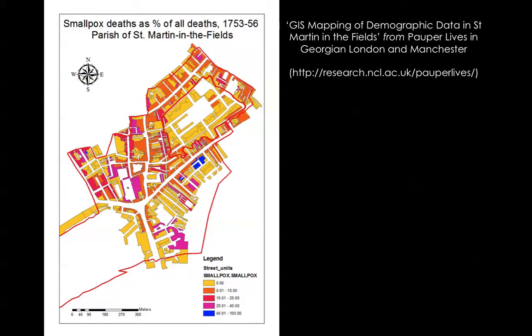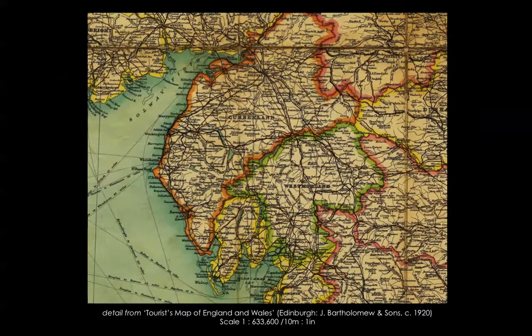Between 2007 and 2008, members of our project team, along with Professor Sally Bushell, conducted a pilot study to test the interpretive possibilities of using GIS to map out historical accounts of the English Lake District. The Lake District, broadly conceived as comprising the old counties of Cumberland, Westmoreland, and northern Lancashire, is an ideal focus for a study that uses GIS because it's a region that has long been portrayed in poems, guidebooks, and paintings.